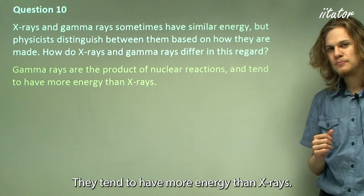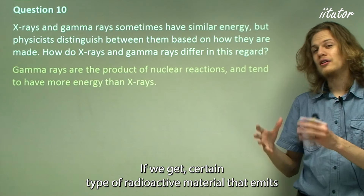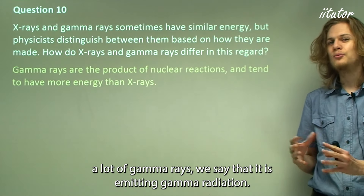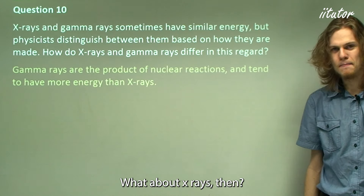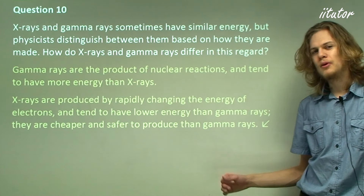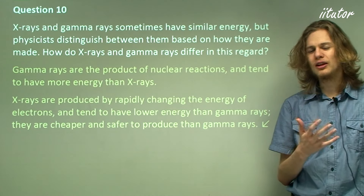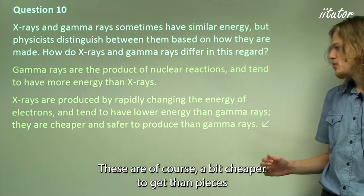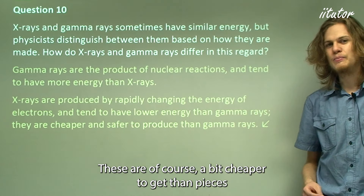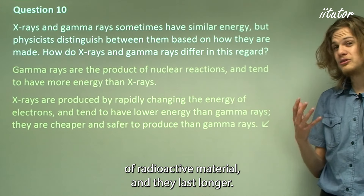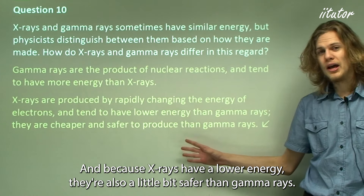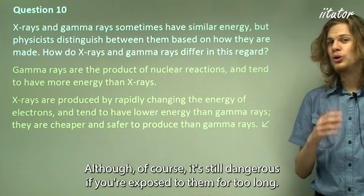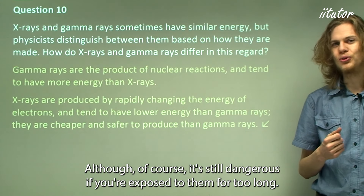Gamma rays tend to have more energy than x-rays. X-rays are produced by rapidly changing the energy of an electron using a device called an x-ray tube. These are a bit cheaper to obtain than pieces of radioactive material and last longer. Because x-rays have lower energy, they are also a little bit safer than gamma rays, though still dangerous if you're exposed to them for too long.